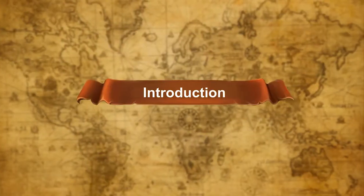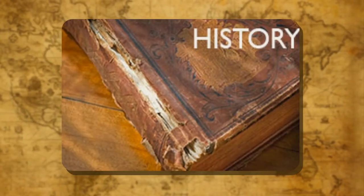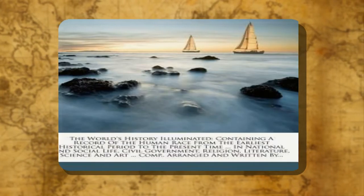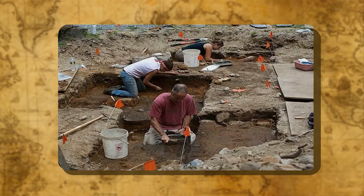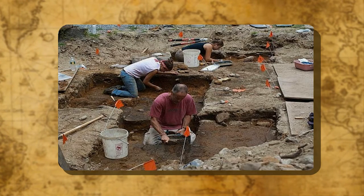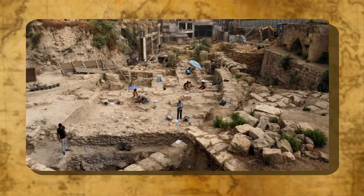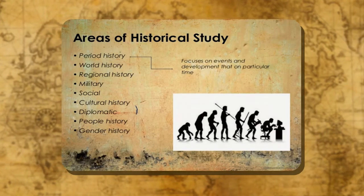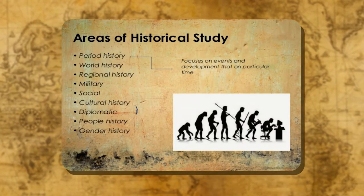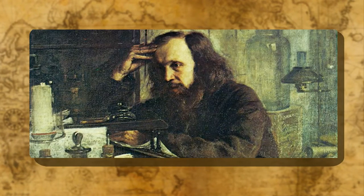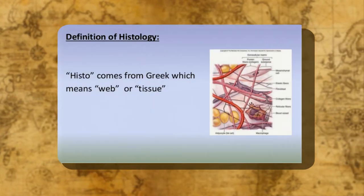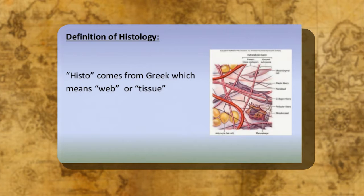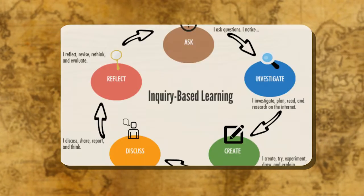History is the study of the past, particularly the written record of the human race. History is about what people did and how they lived in the past, more generally including scientific and archaeological discoveries about the past. Social history is an area of historical study considered by some social scientists. The word history comes from the Greek word 'histo' which means 'know this' and 'historio' which means 'learn by enquiry'.